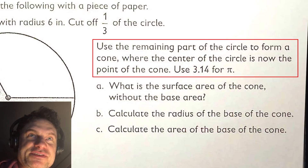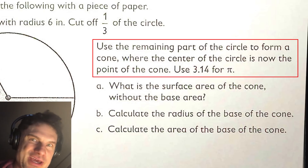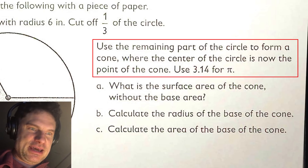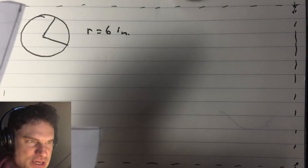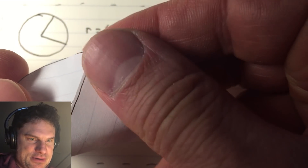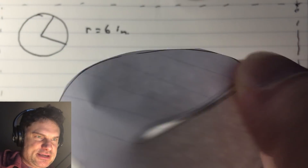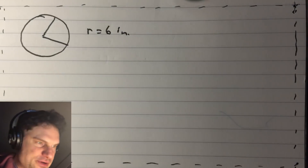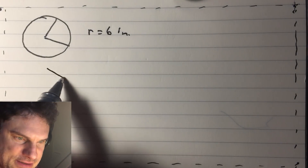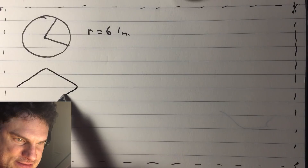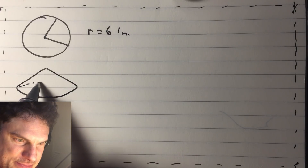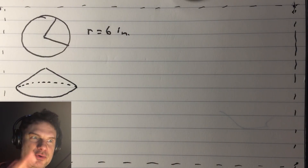Use the remaining part of the circle to form a cone, where the center of the circle is now the point of the cone. I have cheated a little bit, so I have cut this before. Now we take it and make it into a cone. So if we go like this — bop. And now look, it's a cone. Let me draw it for you.